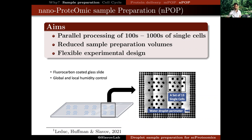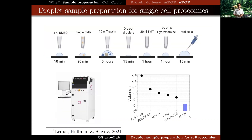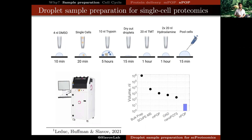In addition to droplets used for lysing and preparing individual cells, we also deposit a perimeter of water droplets to control local humidity, because having tiny droplets on an open surface can result in losses unless we control humidity very carefully. The method starts by depositing DMSO, then single cells are deposited one at a time into these droplets of DMSO to be lysed, then digested by trypsin.